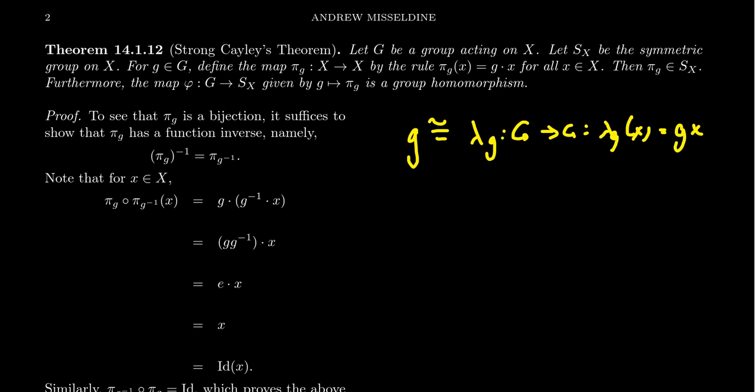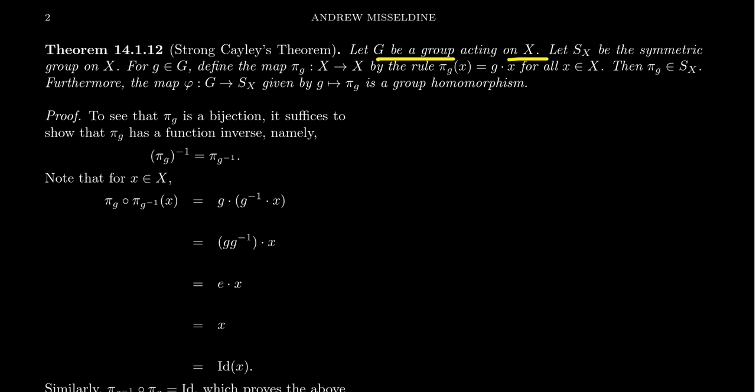It turns out that in general we can associate a group with basically any of its group actions and get a stronger condition. So let's state specifically what the Strong Cayley's theorem states. G is a group acting upon some G-set, call it X. Associated to X, we can take S_X, which is the symmetric group on the set X — the collection of all permutations on the set X — and that does form a group.